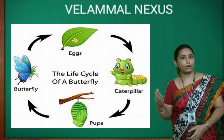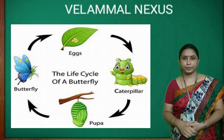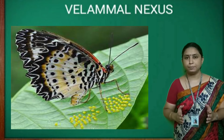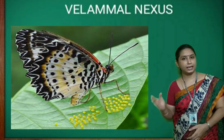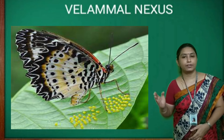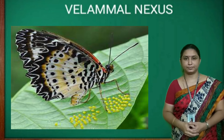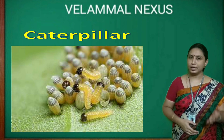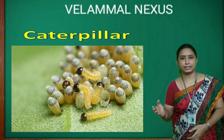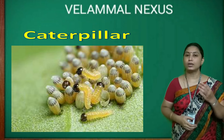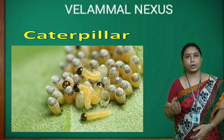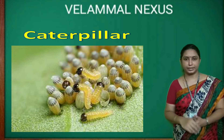Next, let's see the life cycle of butterfly. Butterflies also reproduce by laying eggs on the leaves of plants. The young one, or the larval stage of a butterfly, called a caterpillar, hatches out of each egg.